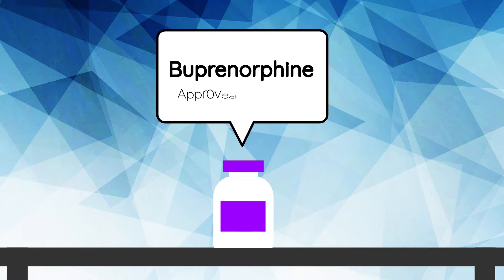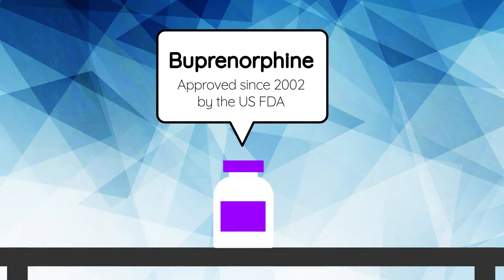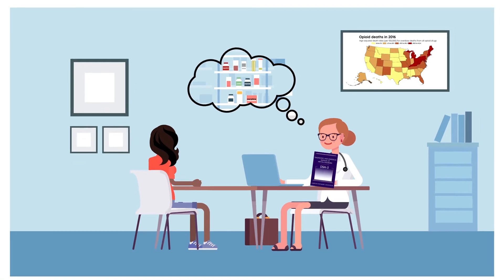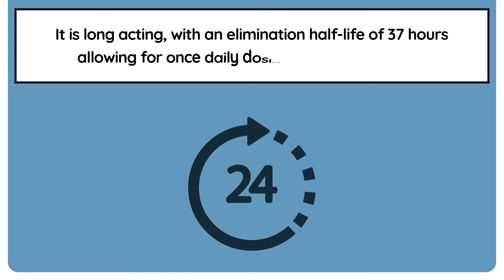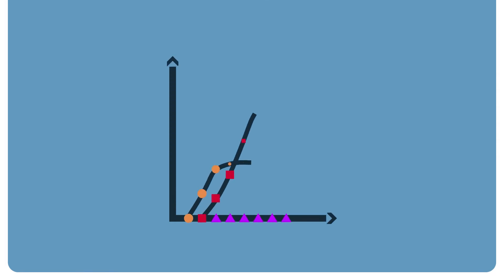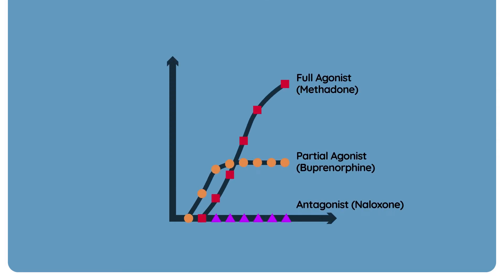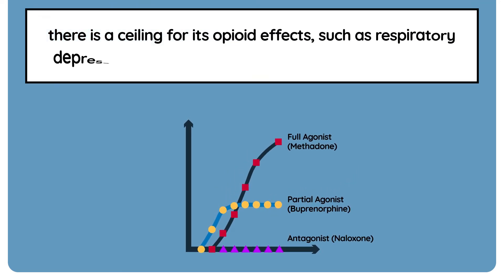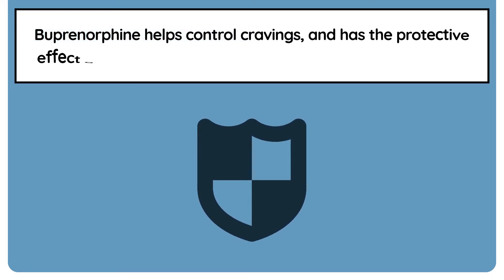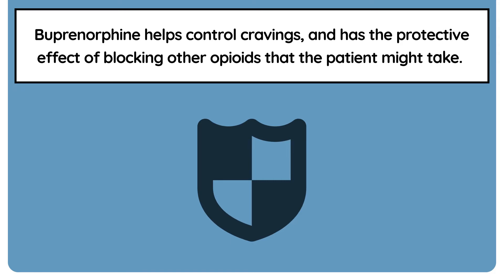Sublingual buprenorphine was approved in 2002 by the U.S. Food and Drug Administration for use by qualified prescribers in their respective medical settings. Buprenorphine is a semi-synthetic opioid. It is long-acting with an elimination half-life of 37 hours, allowing for one daily dosing for most patients. Buprenorphine acts as a partial agonist at the mu opioid receptor. It has a high affinity for this receptor and is slow to dissociate from it. But because buprenorphine is a partial agonist, there is a ceiling for its opioid effects, such as respiratory depression, making it safer than full opioid agonists. Buprenorphine helps control cravings and has the protective effect of blocking other opioids that the patient might take.